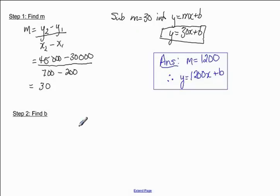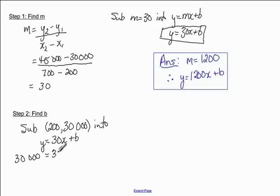We're now going to move on to step two, which is to find b. So I'm going to choose either of those two given points, and I'm going to sub it into this formula that we have started to find. So I'm going to choose the first point. So I'm going to sub 200, 30,000 into y is equal to 30x plus b. Okay, so my y value is 30,000 is equal to 30 times 200 plus b. So all I want to do here is solve for b.